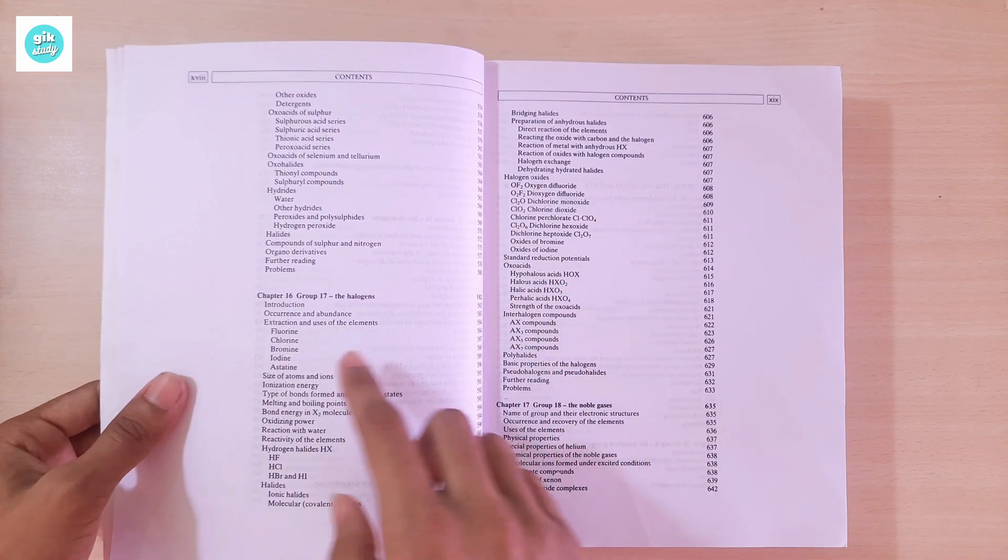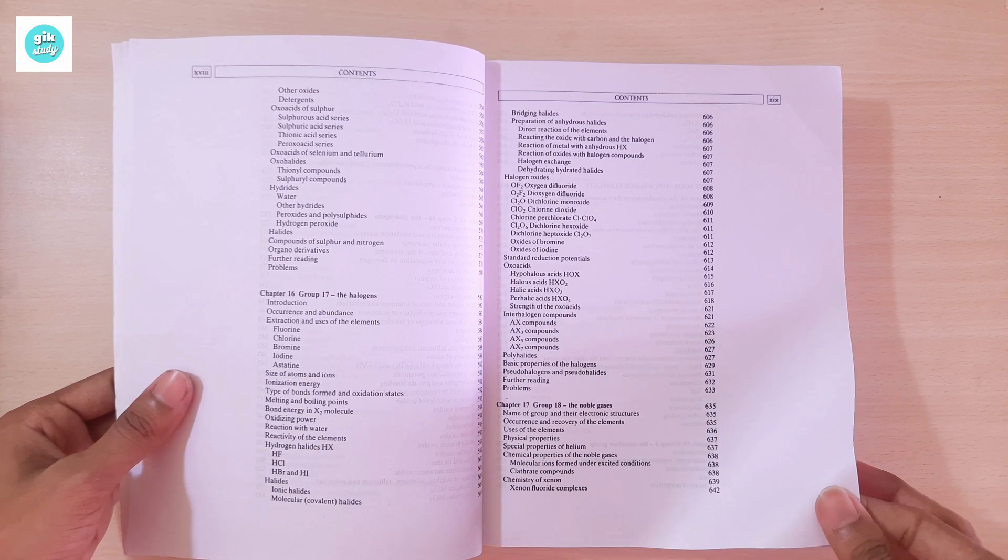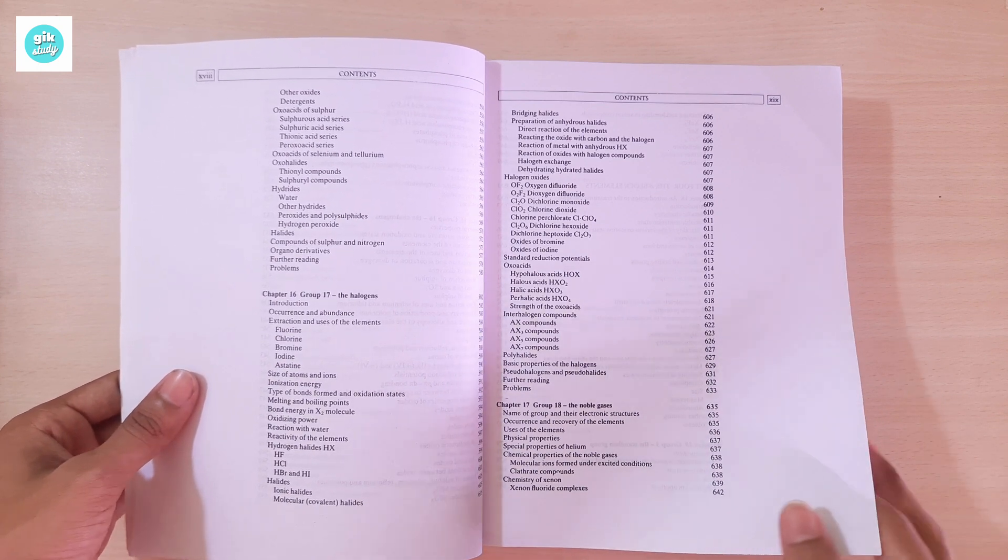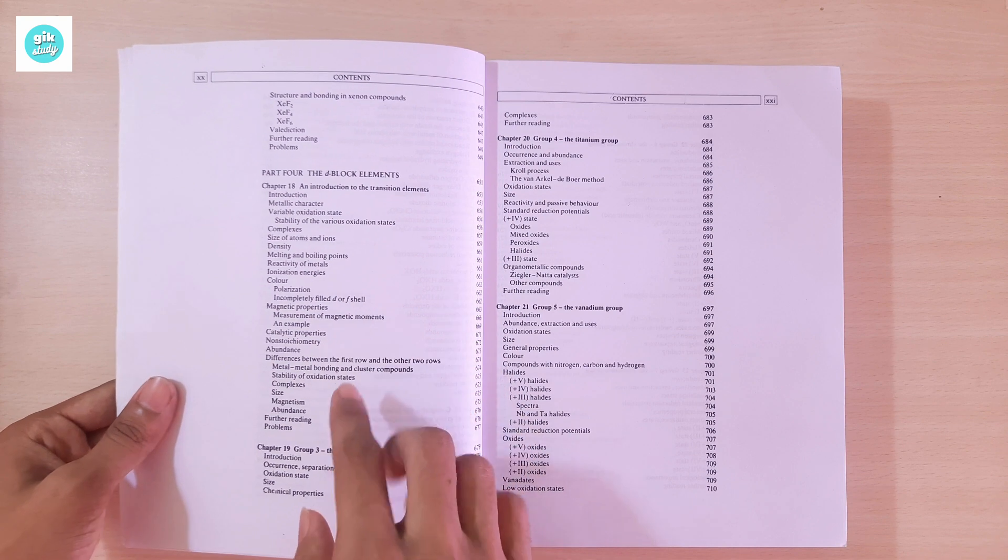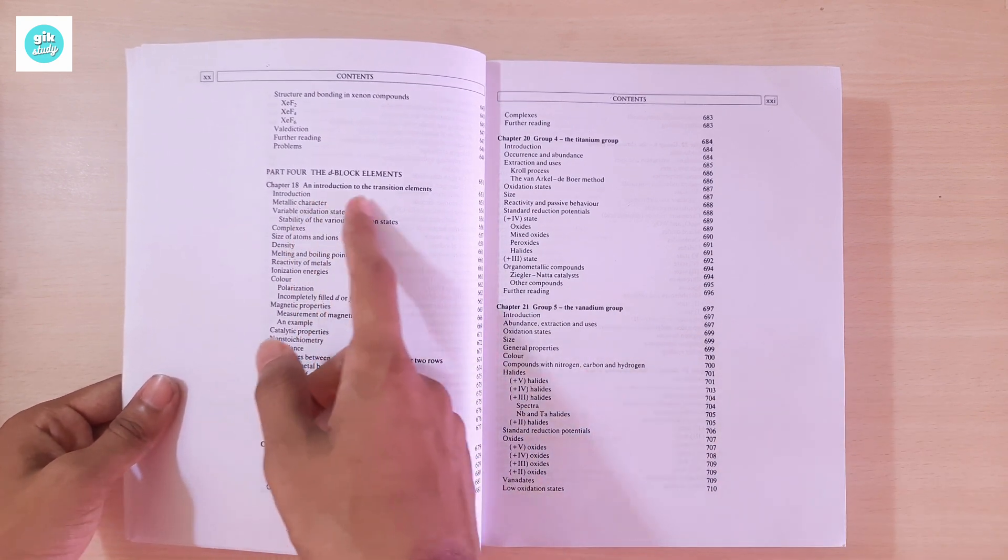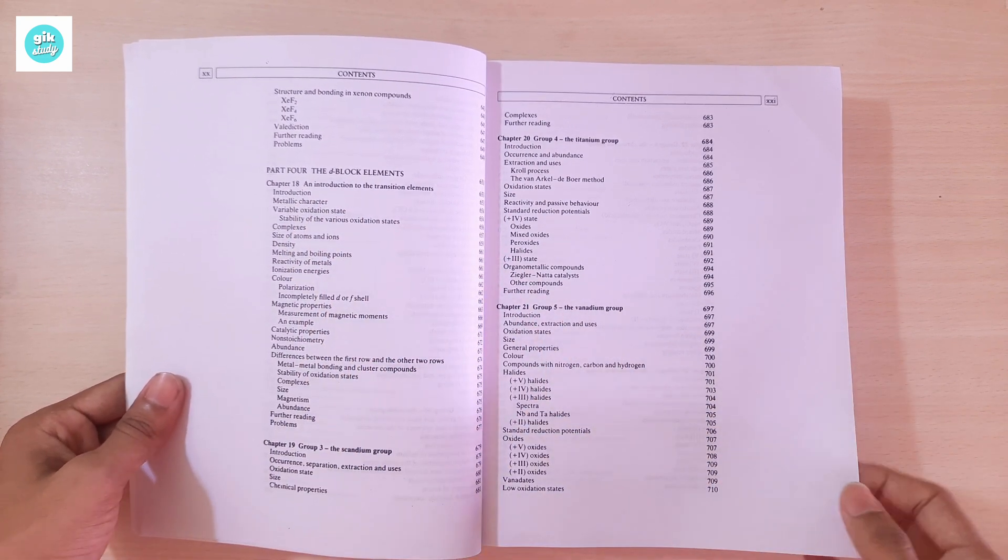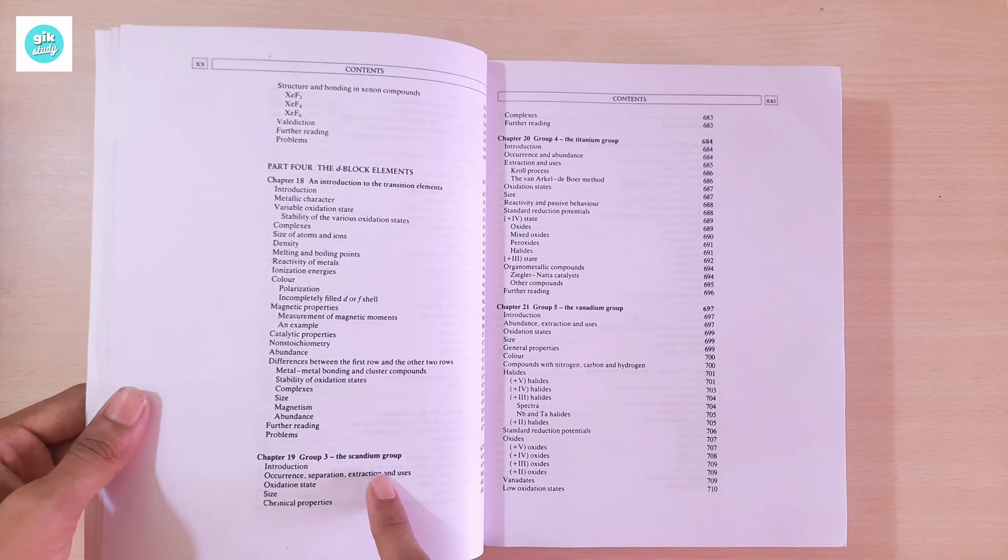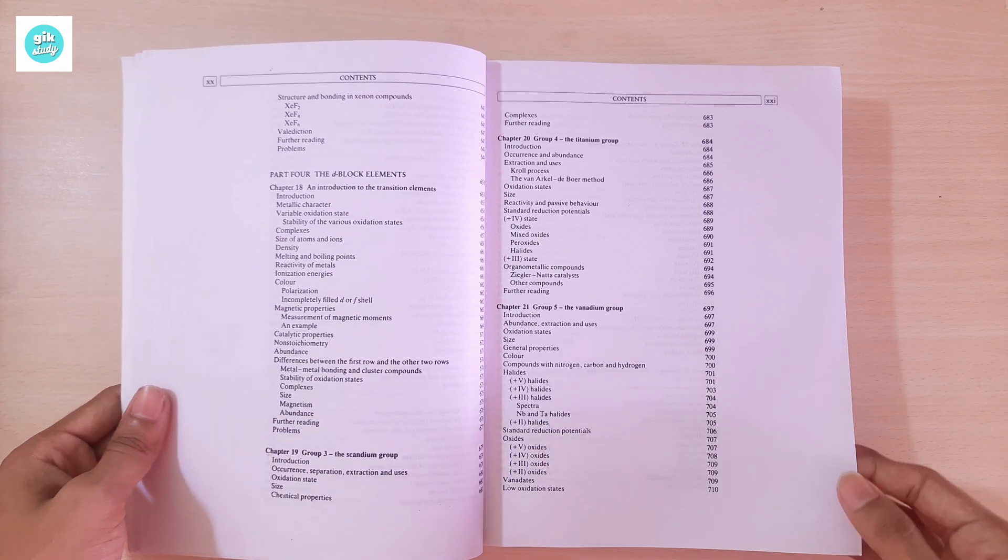Chapter 16: Group 17, the Halogens. Chapter 17: Group 18, the Noble Gases. Part Four: The D-Block Elements. Chapter 18: Introduction to the Transition Elements. Chapter 19: Group 3, the Scandium Group.